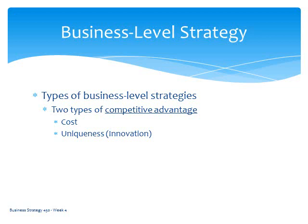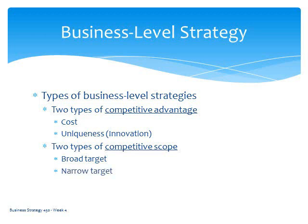Competitive advantages are also combined with two types of competitive scope. One is broad target — large markets, broader consumer segments, maybe all consumer segments. Narrow target would be a very unique, narrow segment — it might be culturally aligned, by age, or by economic capabilities. In that case, you're not targeting every possible consumer; instead, you're reaching out to specific customers in a particular segment, whether on the basis of cost or uniqueness.